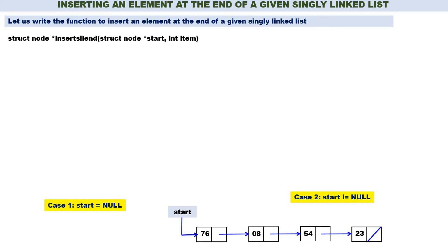The first statement in the function: the name of the function is insert_sll_end. SLL means singly linked list, end means we are inserting an element at the end. Two parameters are there: start and item. We require the starting address of the linked list, therefore start; and we require one element to be inserted, that is item. The function returns a pointer to the struct node.